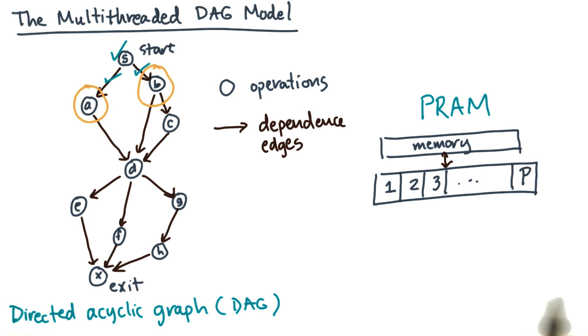So for example, it looks like processor 1 and processor 3 are free. So let's assign A and B to them. Now, when processor 1 and processor 3 finish their units of work, then that will enable other successors. In this case, vertices C and D. And this process will repeat until we finish.